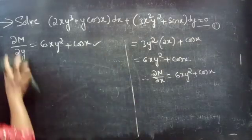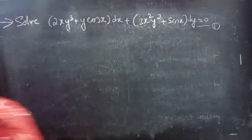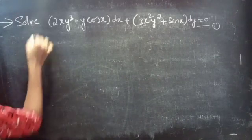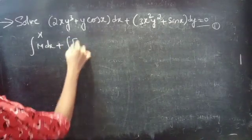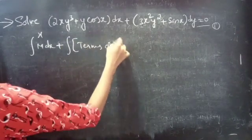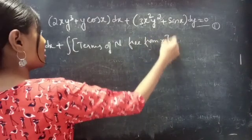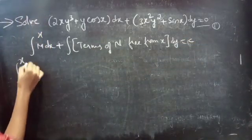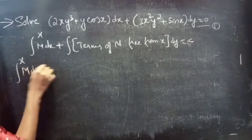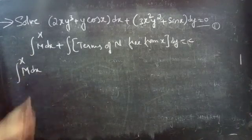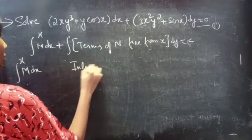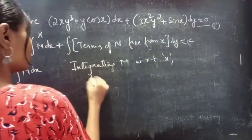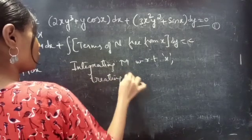So now we have to find the general solution of the given differential equation. Since the given differential equation is exact, the general solution is given by: integral of M dx (treating y as constant) plus integral of terms of N free from x dy equals to constant c.